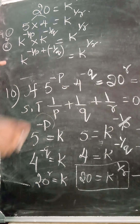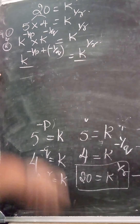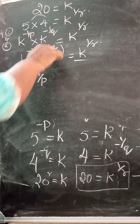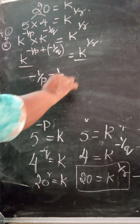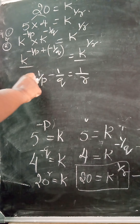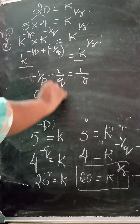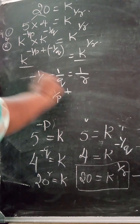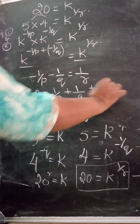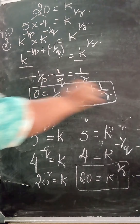Now I shift both terms to the right side. So 0 = 1/p + 1/q + 1/r — the minus signs become plus when shifted. Hence we have proved that 1/p + 1/q + 1/r = 0.